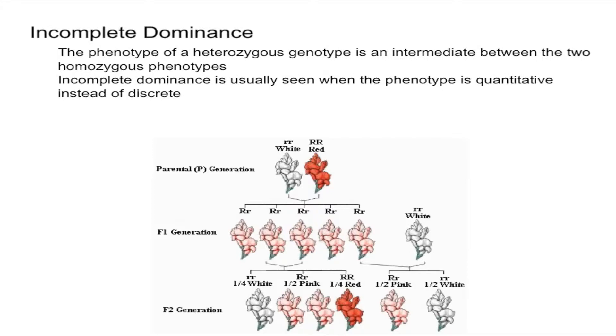I don't really like that definition too much, it seems kind of complicated, so I'm going to explain it in a different way. Essentially what it is is incomplete dominance is just when one allele is not completely dominant over another allele.